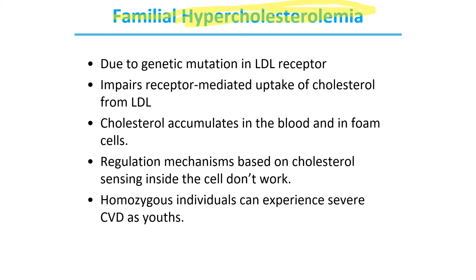Familial hypercholesterolemia means too much cholesterol in the blood — higher than normal — and 'familial' means the problem is genetic. The cause is a genetic mutation in the LDL receptor. This mutation impairs receptor-mediated uptake of cholesterol from LDL, so cells cannot take up cholesterol, causing it to accumulate in the blood. The regulation mechanisms of cells essentially stop working, resulting in high blood cholesterol levels — hypercholesterolemia.